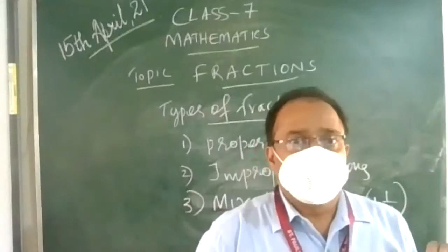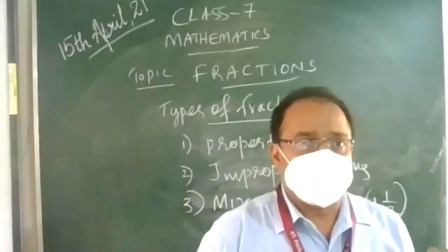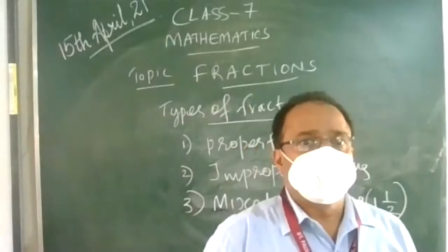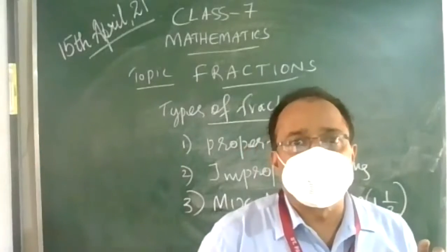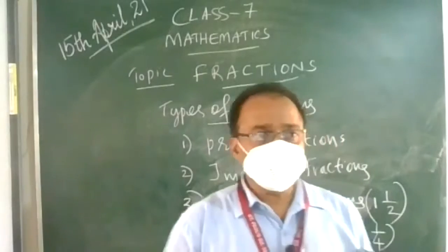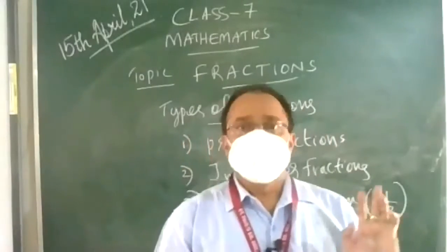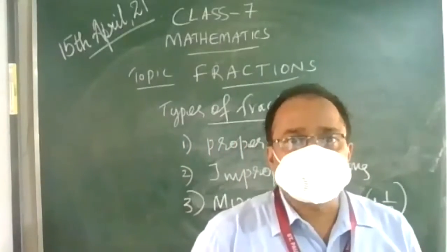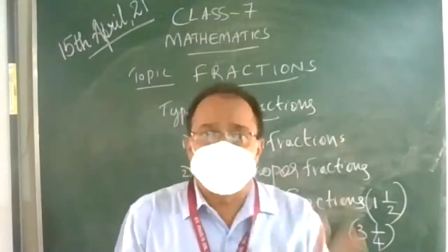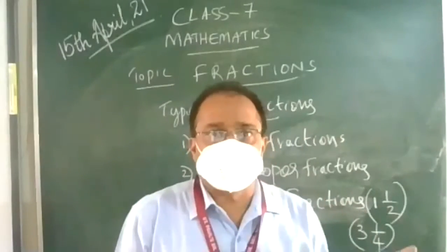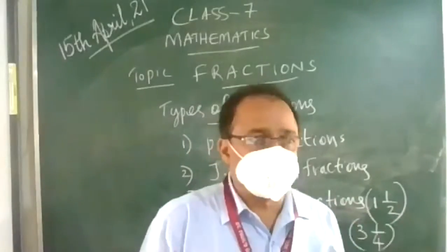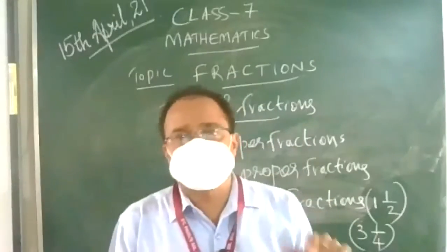Improper fractions have a numerator bigger than the denominator, and their value is always greater than 1. Mixed fractions have a complete whole number — like 1, 2, 3, 4 — followed by a fraction, such as 3 and 1 upon 2, or 1 and 1 upon 2, etc.